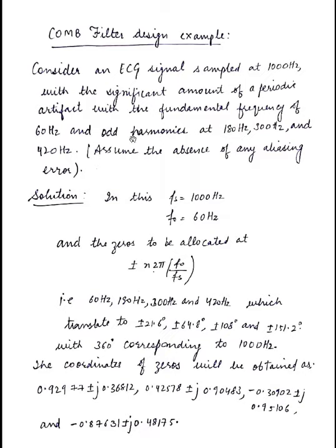So now what is given to us? We are given a sampling frequency of 1000 Hz and a fundamental frequency at 60 Hz. So we know for the comb filter, the zeros will be located at the location which is given by plus minus n times 2π f0 by fs.